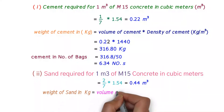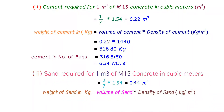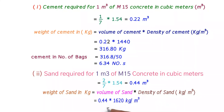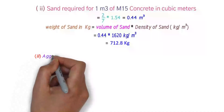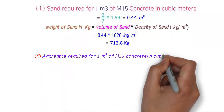We are converting the sand volume into weight by multiplying by the density of sand. The volume of sand is 0.44 cubic meters and the density of sand is 1620 kg per cubic meter. Multiplying these gives the weight of sand as 712.88 kg.